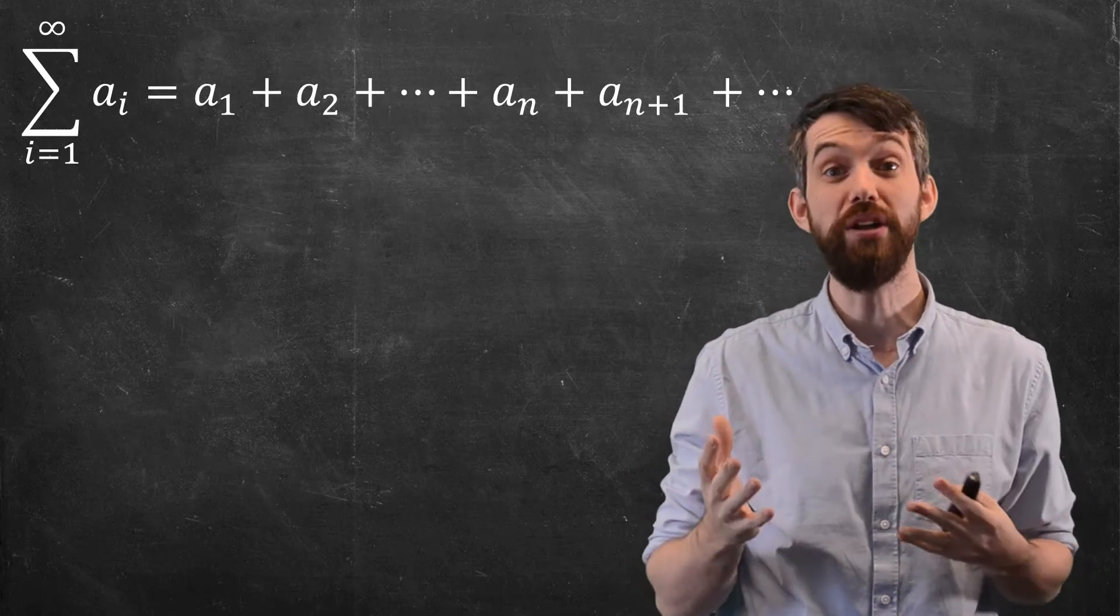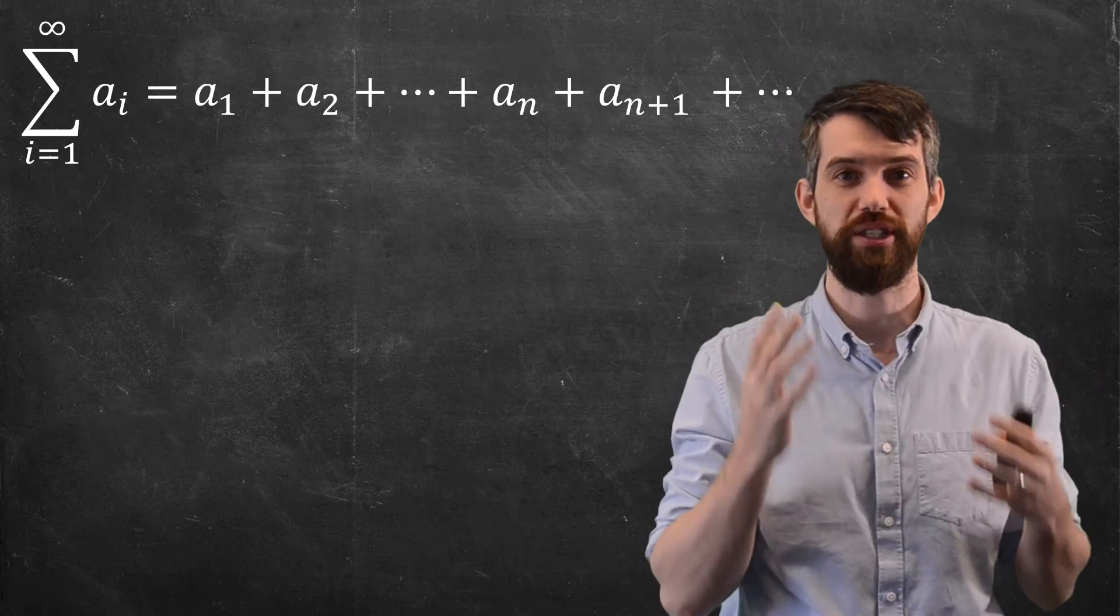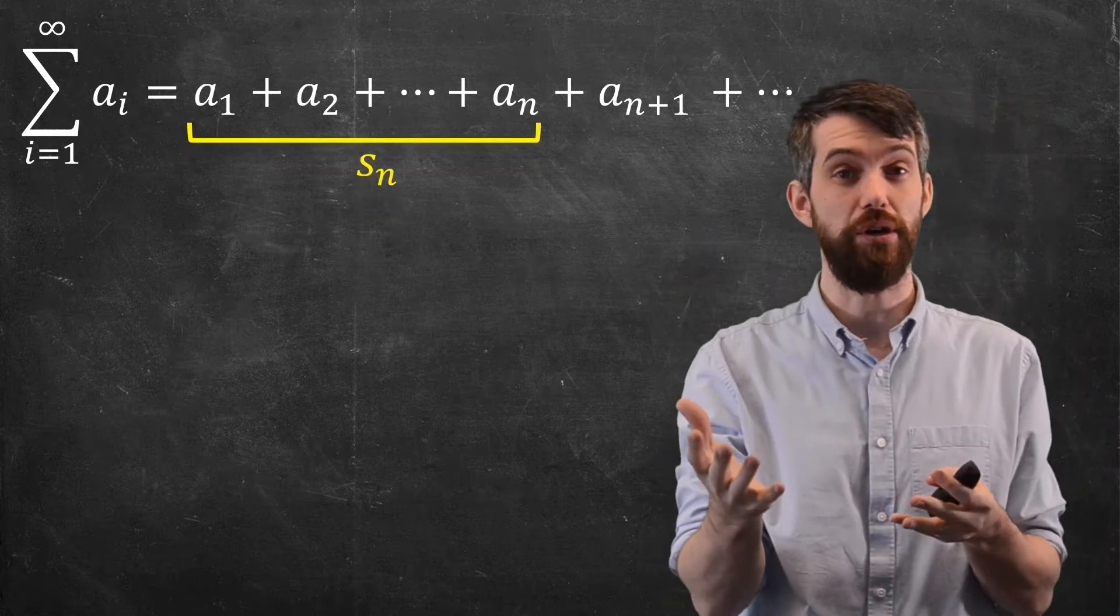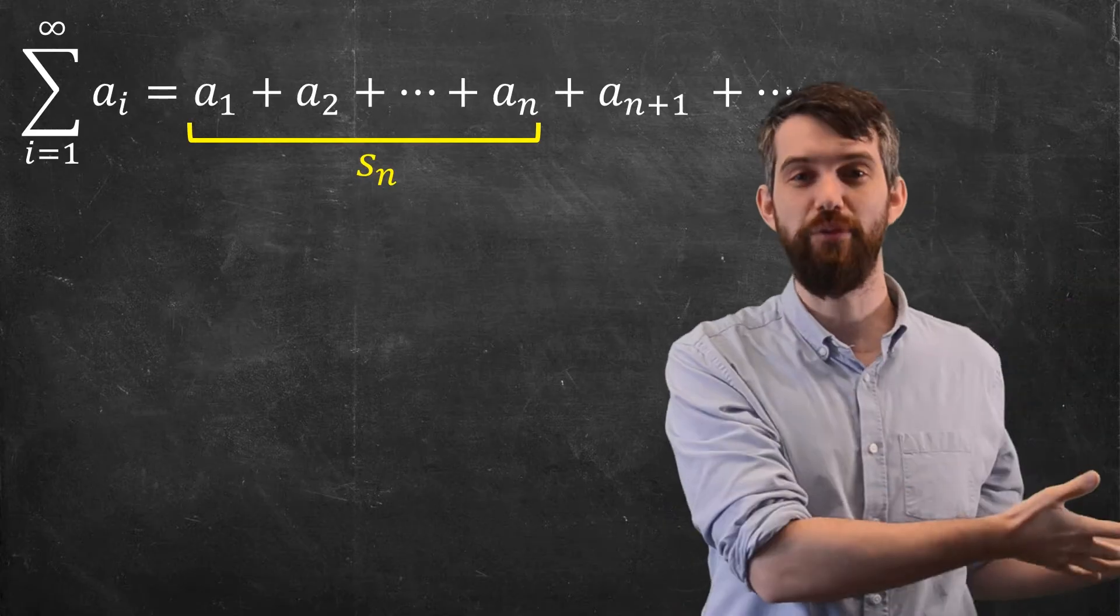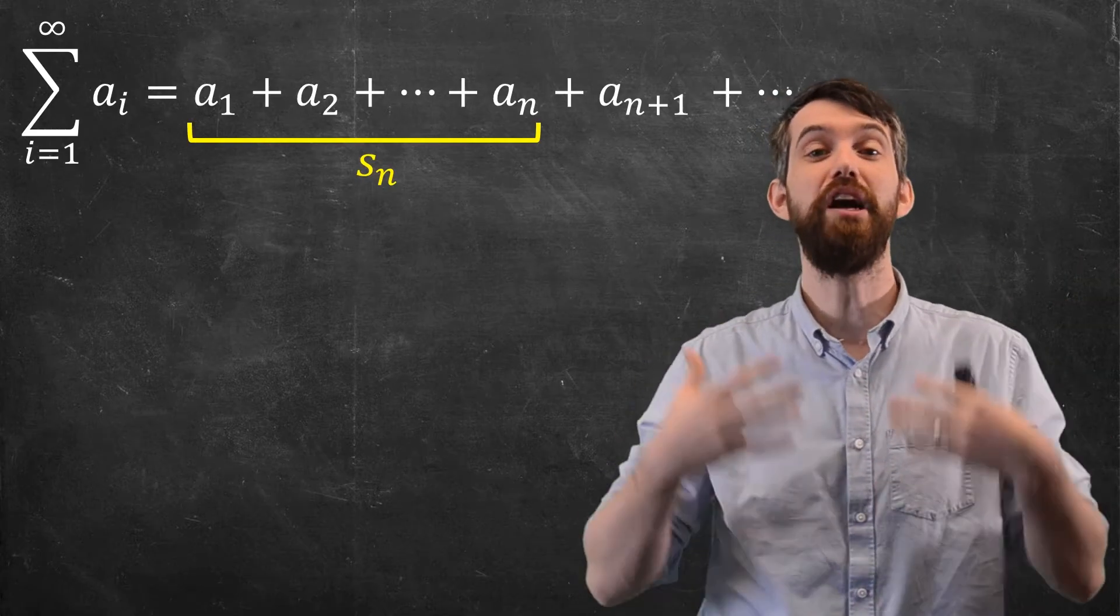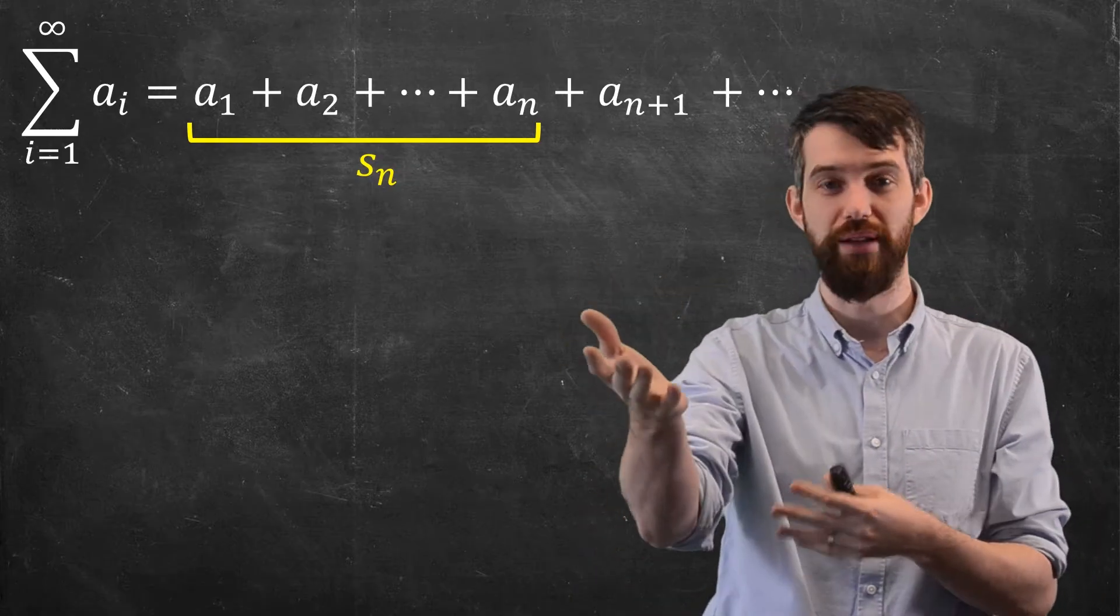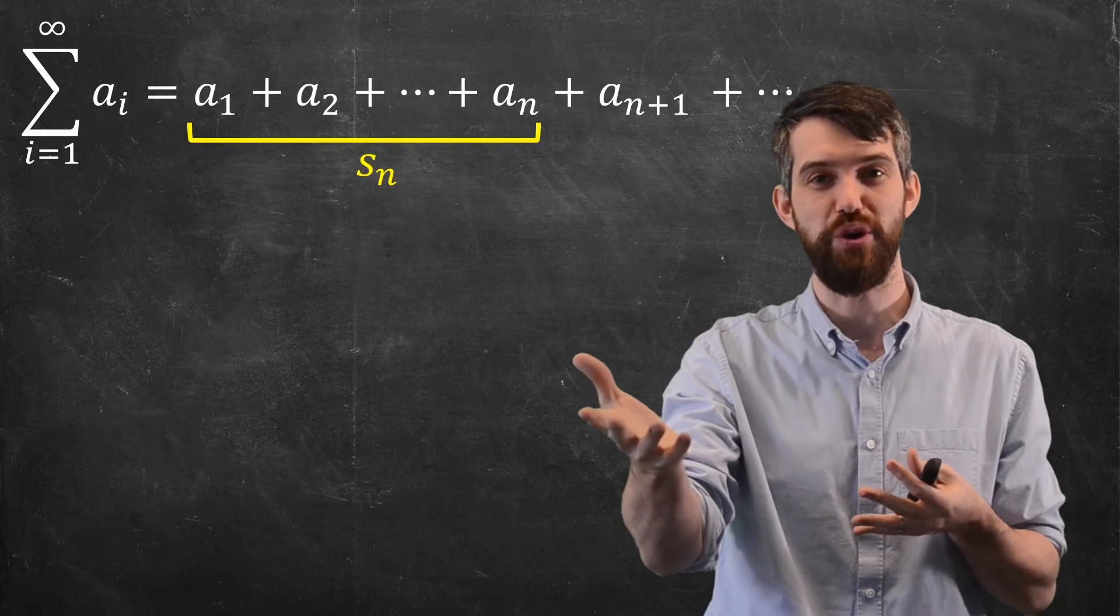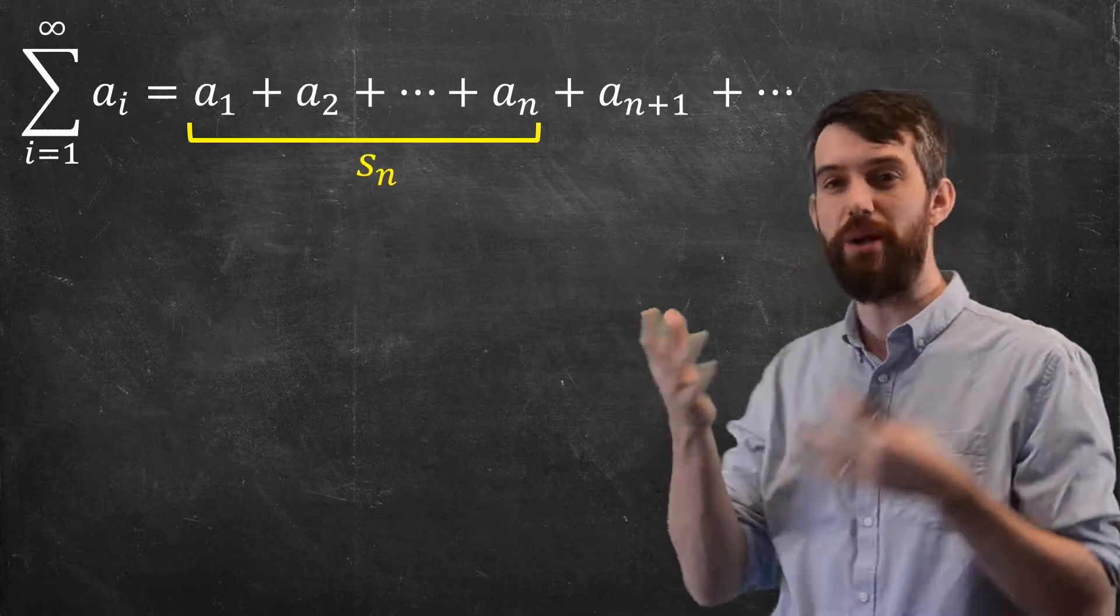The reason I did this is that I want to talk about the nth partial sum, and the nth partial sum is just the sum of the first n terms. Indeed, when we defined what it meant for a series to converge, we talked about the limit of the partial sums going to a limit L. So this nth partial sum was very important to us.